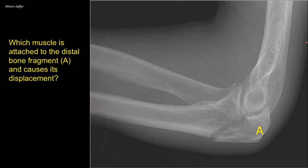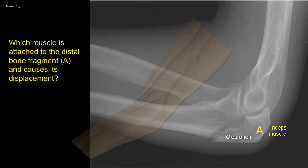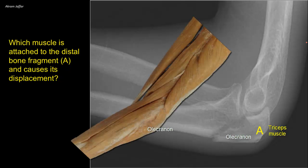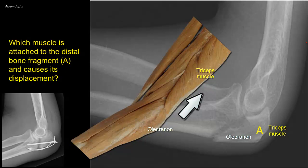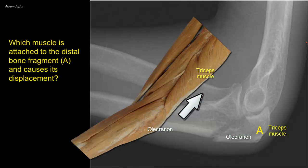Which muscle is attached to the distal bone fragment A and causes its displacement? A is the olecranon of the ulna, and the muscle attached to it is the triceps muscle. Direct violence results in fracture of the olecranon, in which case the fragments are widely separated because the olecranon is pulled by the triceps. Thus, it requires surgical repair to reconstruct the integrity of the elbow joint. Sometimes, olecranon fracture results from avulsion by forcible contraction of triceps muscle.